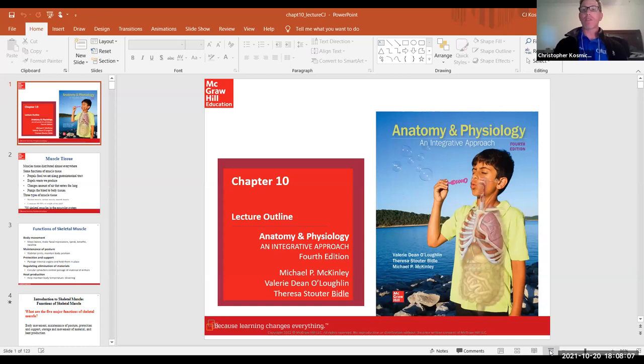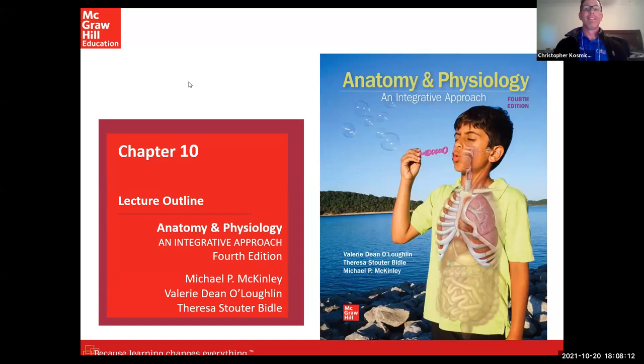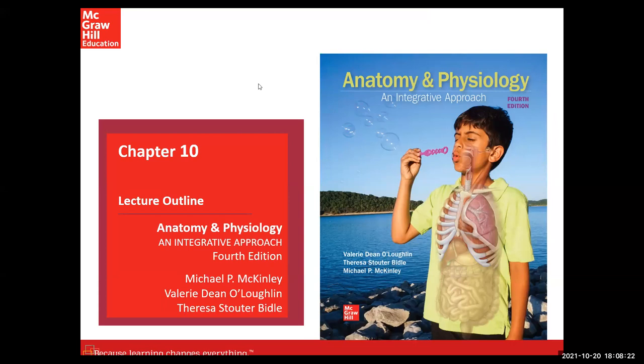Here's Chapter 10 on our muscles. Muscle is one of the four types of tissue in the body — epithelial tissue, connective tissue, muscle tissue, and nervous tissue. We have covered all the other tissues except for muscle tissue, so now we're going to go ahead and do that with a brief introduction into muscle tissue.